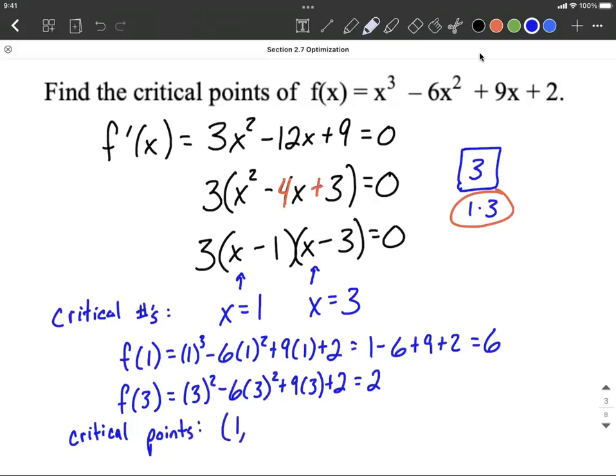are going to be an x value of 1 with a y value of 6, and an x value of 3 with a y value of 2. So to answer this question completely, these are our solutions. All right, hope this helps out as you're working through finding critical points.